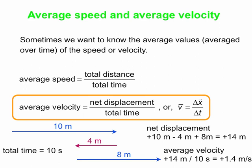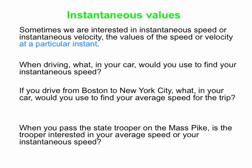Average speed is always straightforward — just sum all the individual distances in each part of the trip. The net displacement is trickier, especially beyond one dimension. Sometimes we want to know about instantaneous values: how fast and in what direction you're traveling at a particular instant. That's either the instantaneous speed or the instantaneous velocity.